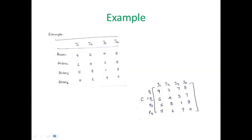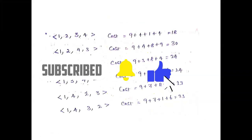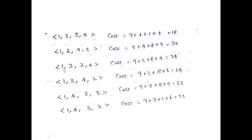First, we assume that we assign the first job to the first person. Then we look at the cost of the jobs when we alternate the remaining persons with different kinds of jobs. Remember the constraint: the same job cannot be assigned to more than one person. In every possibility in this first group, the first job is fixed with the first person.